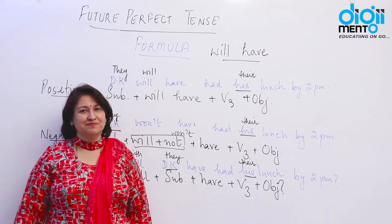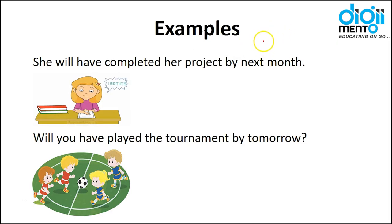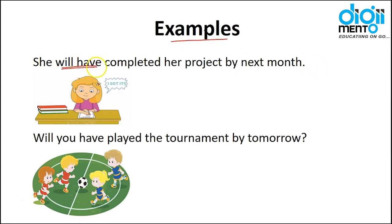Let's look at more examples. 'She will have completed her project by next month' — by next month she will have finished her project. This is a positive sentence. Negative: 'She won't have completed her project by next month.' Question: 'Will she have completed her project by next month?'